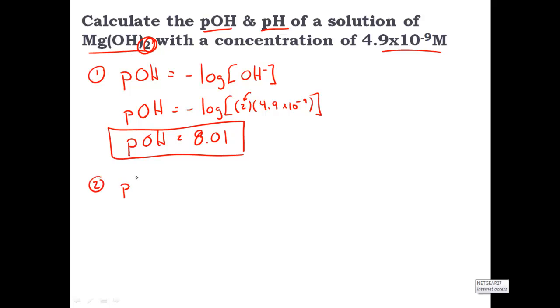Lastly, the pH plus the pOH is going to equal 14. So the pH of the solution will equal 14 minus the pOH. And so once we do our substitutions, we end up finding the pH is going to be equal to 5.99, telling me that this is somewhat of an acidic solution. Not a crazy, crazy acidic solution, but somewhat acidic solution.